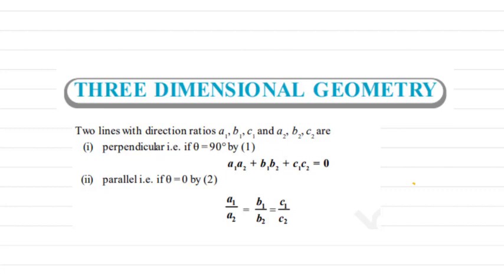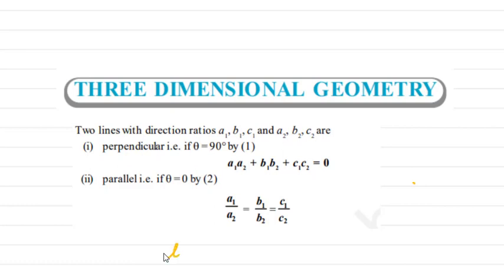From three-dimensional geometry you will get some questions. When two lines are perpendicular or parallel, you have to use the condition: a1*a2 + b1*b2 + c1*c2 = 0, where a1, b1, c1 are the direction ratios of one line and a2, b2, c2 are the direction ratios of another line. If direction cosines are given, then l1*l2 + m1*m2 + n1*n2 = 0.